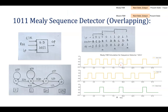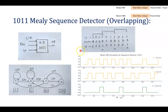Moving towards today's point. In the previous lecture session, we have seen the 1011 Mealy Sequence Detector overlapping type. In that we saw a block diagram where clock is one input, reset is another input, IP is the third input and OP is the output. Depending upon the input applied, output will be 1 only when the whole sequence 1011 is detected; otherwise output will be 0.